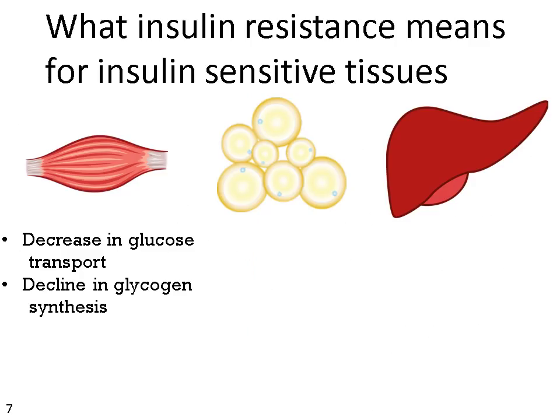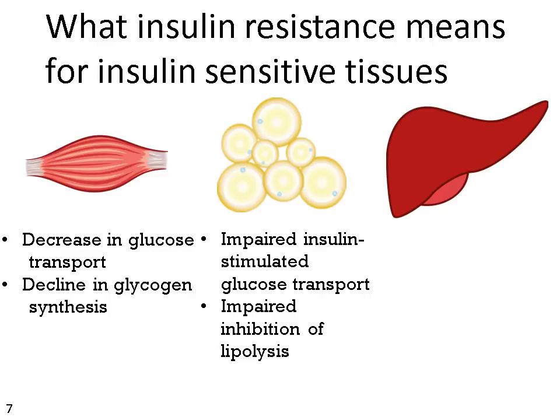We have learned previously that insulin signals are propagated differently depending on tissue type, so it follows that insulin resistance presents differently in the different insulin-sensitive tissues. In muscle, an energy-using tissue, insulin resistance presents as a decrease in glucose transport and a decline in muscle glycogen synthesis despite ever-increasing circulating insulin. In adipose tissue, the energy storage depot, insulin resistance presents as impaired insulin-stimulated glucose transport and an impaired inhibition of lipolysis.